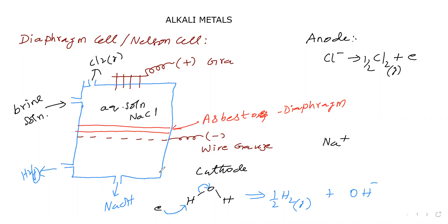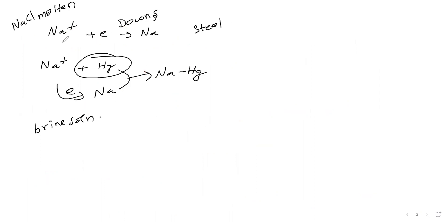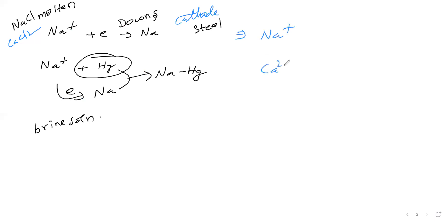So we got sodium hydroxide. But why is sodium ion not undergoing reduction at this cathode? In Down's process, the electrolyte is molten sodium chloride and molten CaCl₂. Both Na⁺ and Ca²⁺ are cations. Sodium ion goes to the cathode and becomes sodium — but why not calcium?